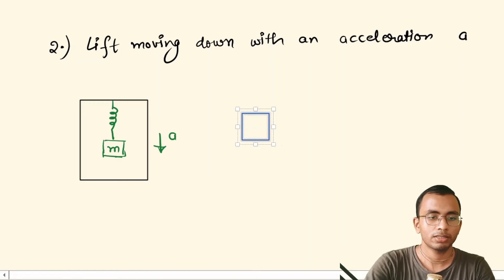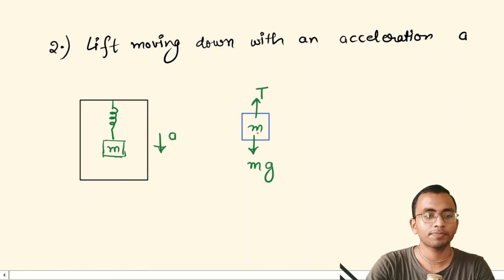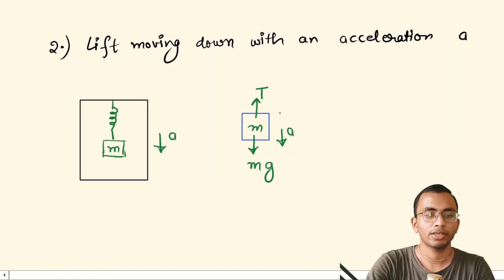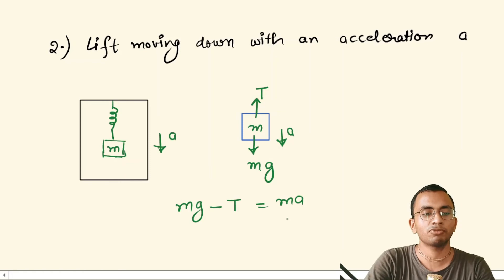This is our mass m. Downward, the force due to gravity mg is acting; upward, the tension force due to the spring is acting; and the mass is moving downward with acceleration a. So here we can say mg minus T equals ma, because this block is moving down.